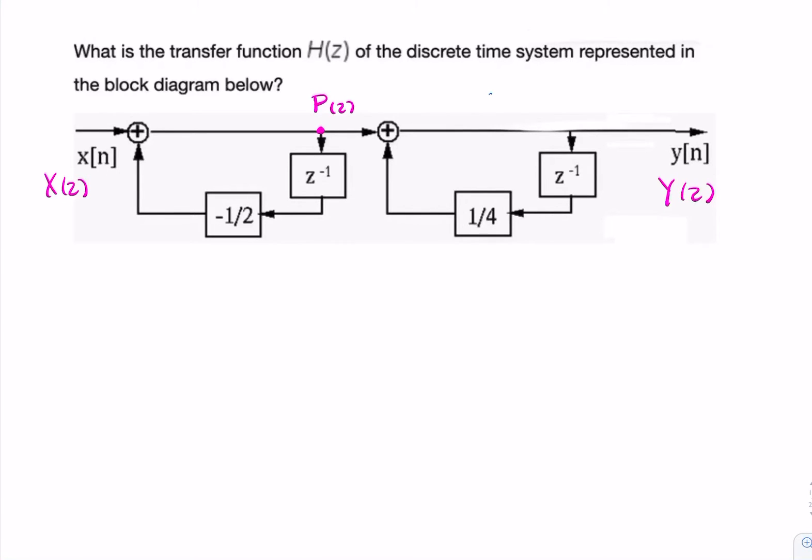we can now look at the output of this addition operator. We have x going in and we have a delayed version of P scaled by a factor of minus half also going in. So we can write P(z) in terms of x(z). I'll attempt that here. P(z) is equal to x(z) plus minus half times z to the minus 1 times P(z).